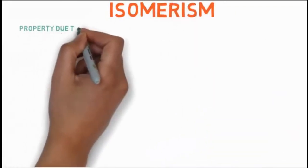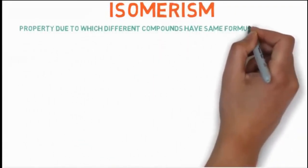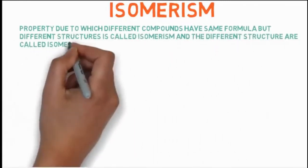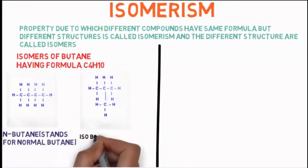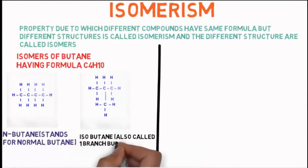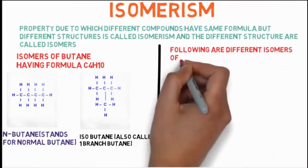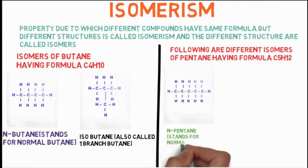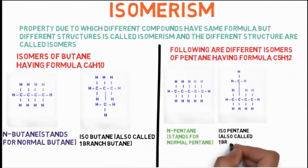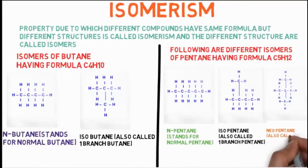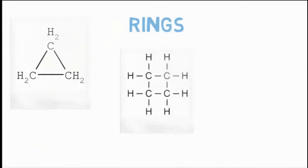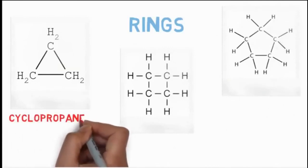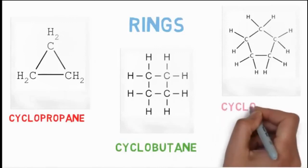Isomerism: the property due to which different compounds have the same formula but different structures is called isomerism, and the different structures are called isomers. Isomers of butane (C4H10): n-butane (normal butane) and isobutane (one-branch butane). Isomers of pentane (C5H12): n-pentane, isopentane (one-branch), and neopentane (two-branch). Carbon chains can also form rings — we add the prefix 'cyclo', for example cyclopropane, cyclobutane or cyclopentane.